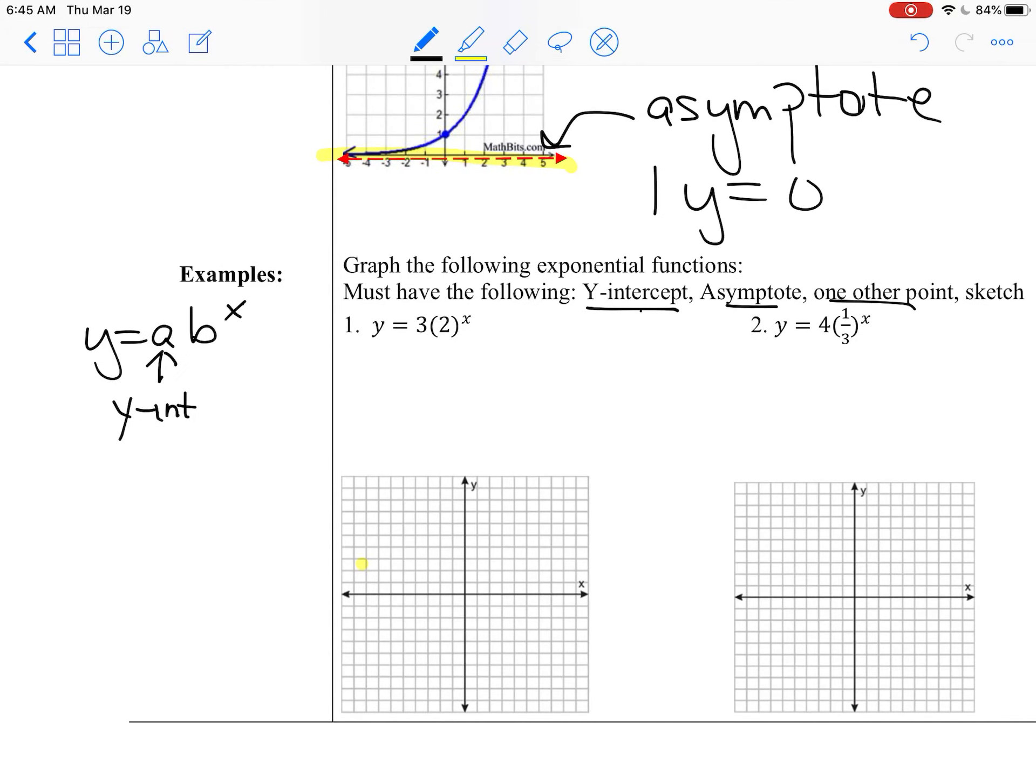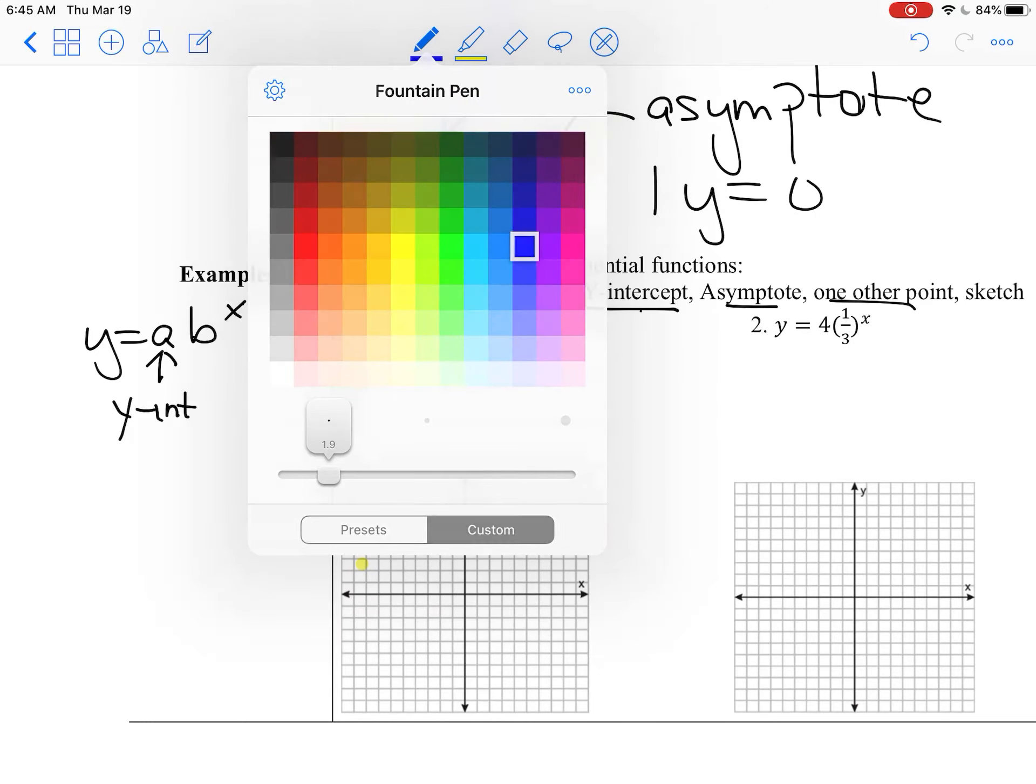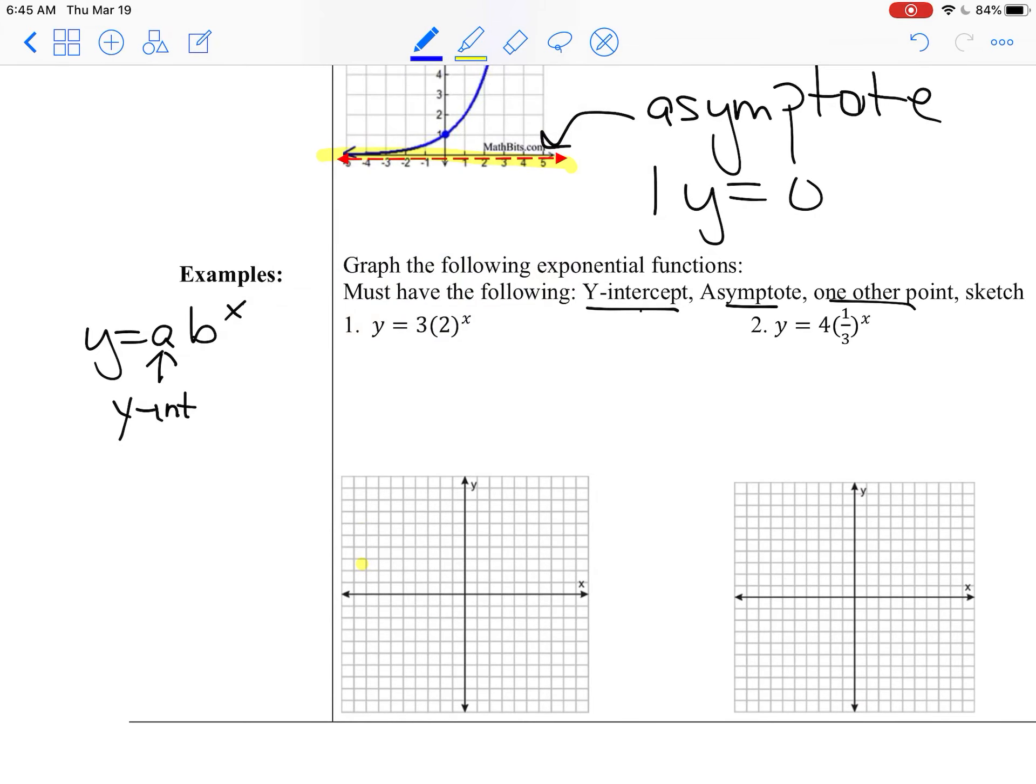All right, so for these two equations here, I'm going to change the color so it's easier to see. This is my y-intercept. And that's (0, 3). So I'm going to go up to (0, 3), right here.